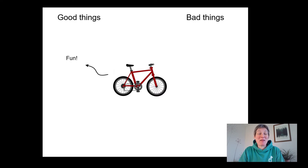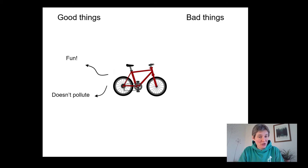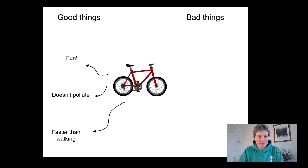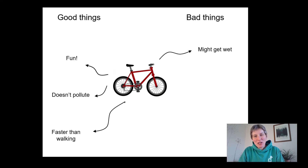I think bikes are fun, especially when you get to zoom down the hills. You're out in the fresh air and you see what's going on around you — I love being on my bike. It doesn't pollute — there's no smoke coming out of your bike, it's just you powering it, so it's really clean and really good for the environment. And it's faster too — if you're going for a walk and want to get there a bit faster, hop on your bike and you'll definitely get there nice and speedily.